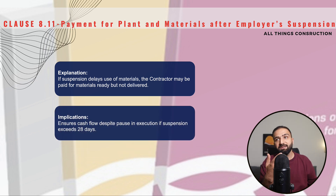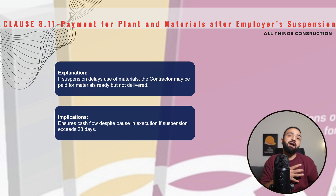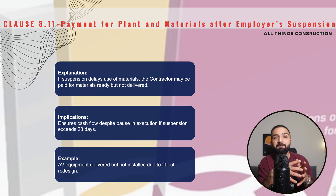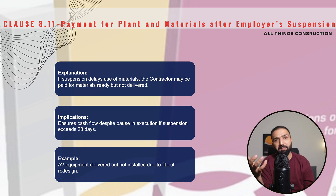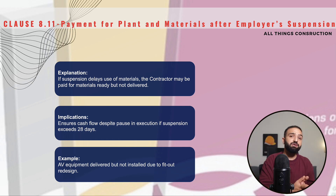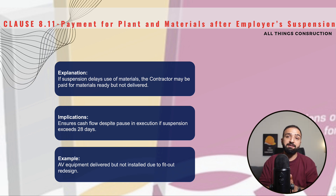What this clause basically does is continue the cash flow and save us contractors from losses. For example, we have audiovisual equipment that we have already ordered — whether delivered to site or not — and the whole fit-out design changes, as a result of which the audiovisual equipment also changes. We will be entitled to the costs incurred as a result of the previous purchase.